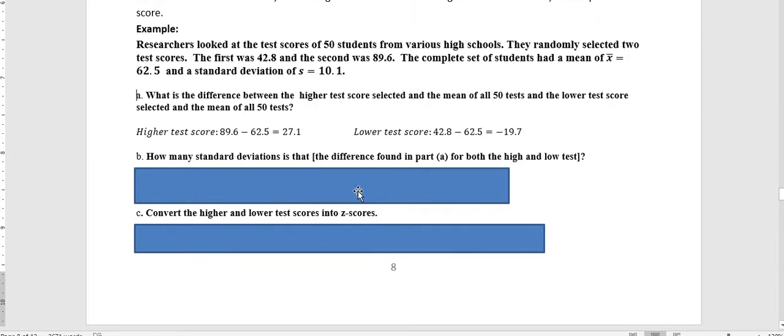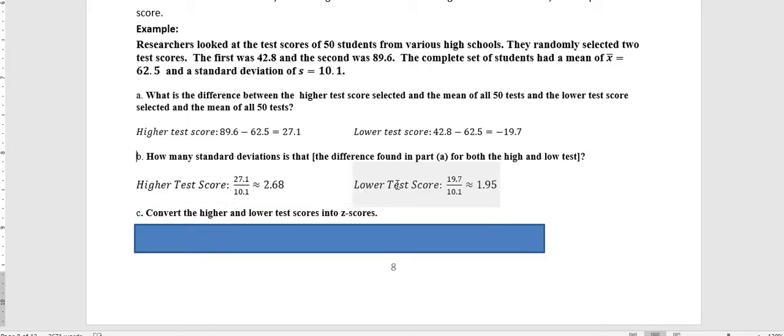The next question is, how many standard deviations is that? To find the standard deviations, we take the absolute value of that number given and divide by the standard deviation. So we're going to take 27.1 and divide by the 10.1, and that gives us 2.68 standard deviations for the higher test score.